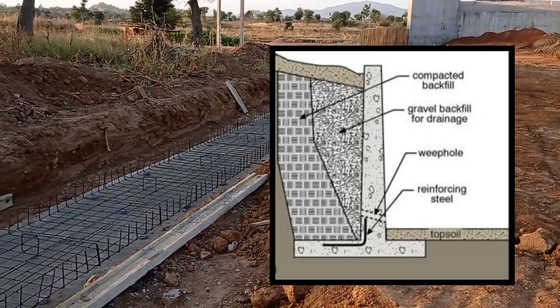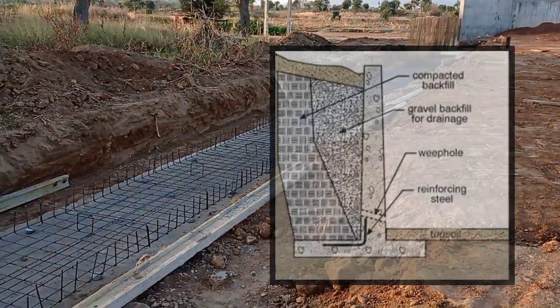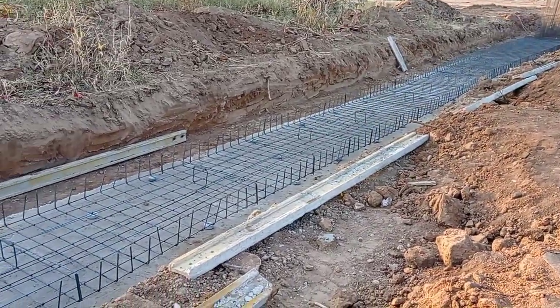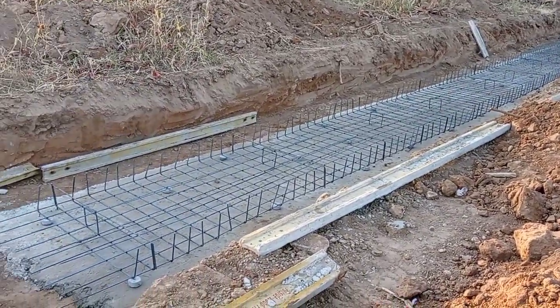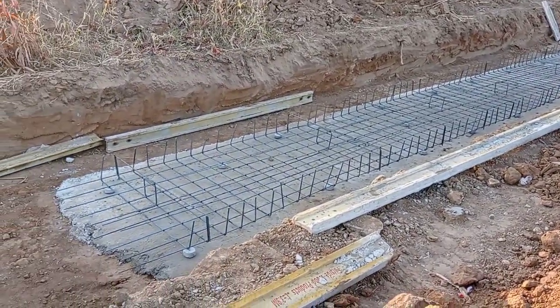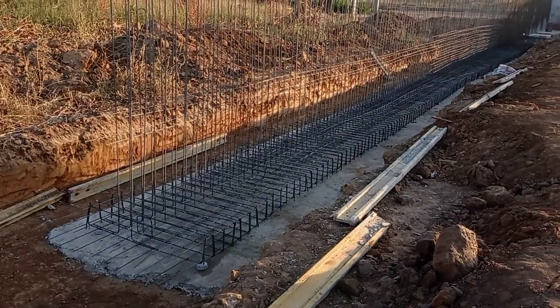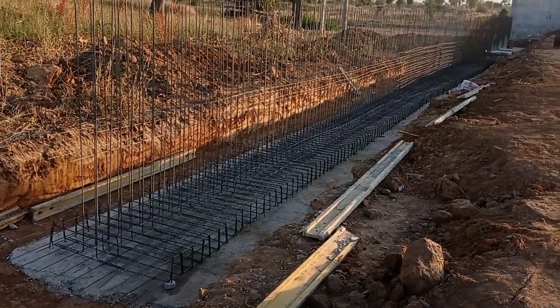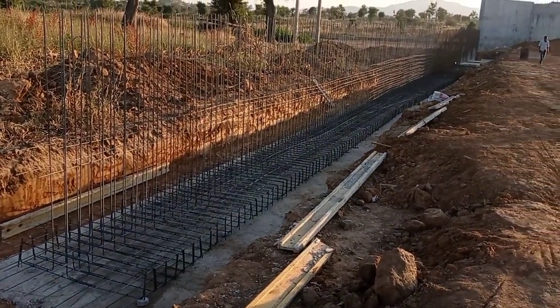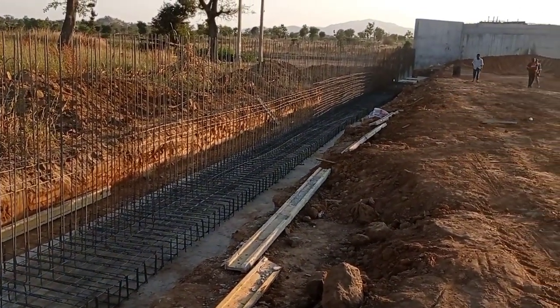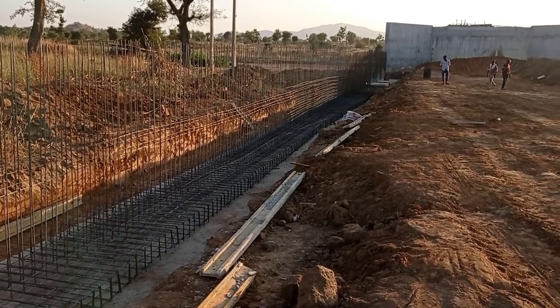the base of the retaining wall. This retaining wall is going to be constructed together with the wing walls of the abutment. The base is going to have a thickness of 40 cm.